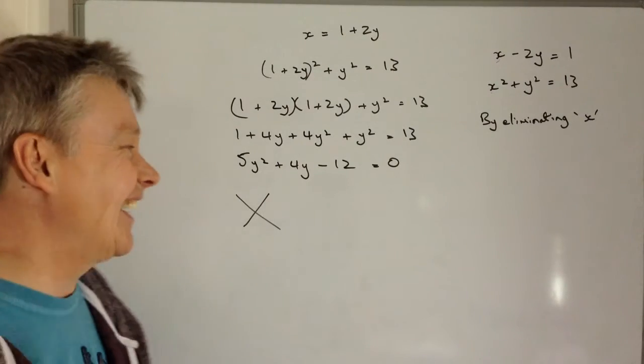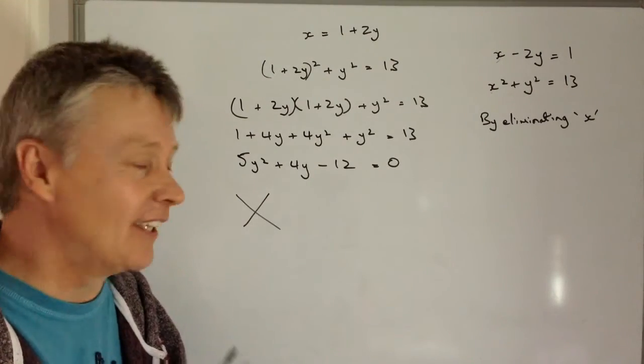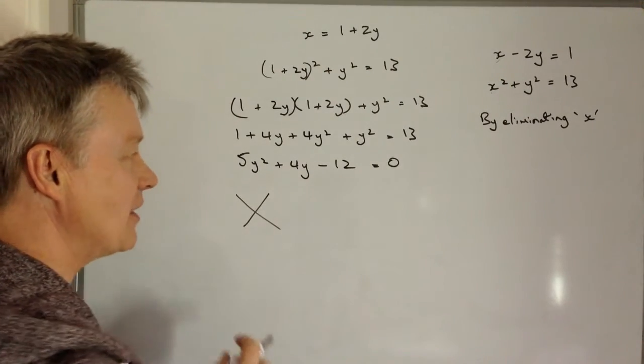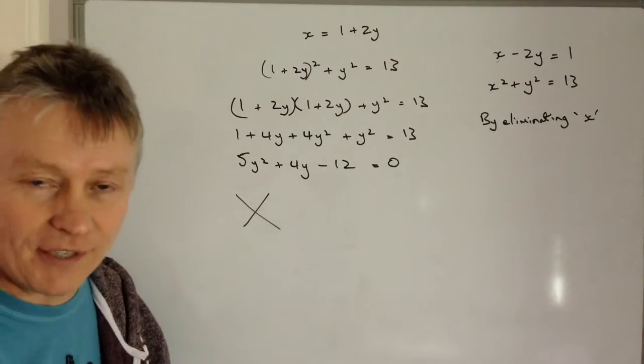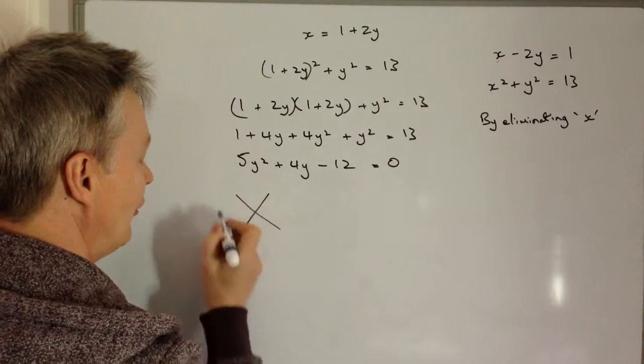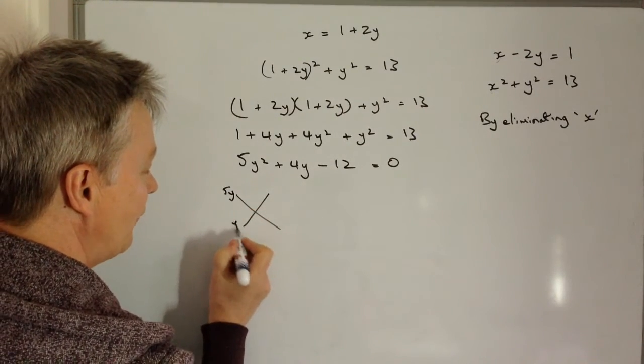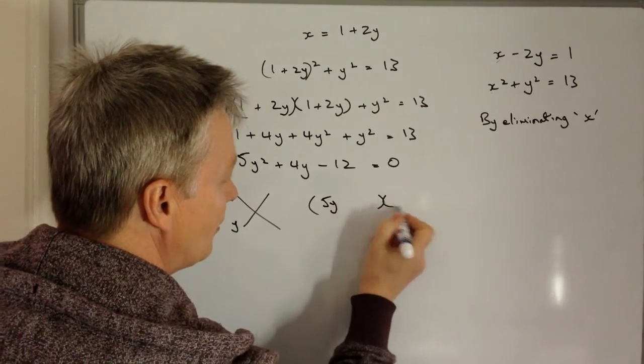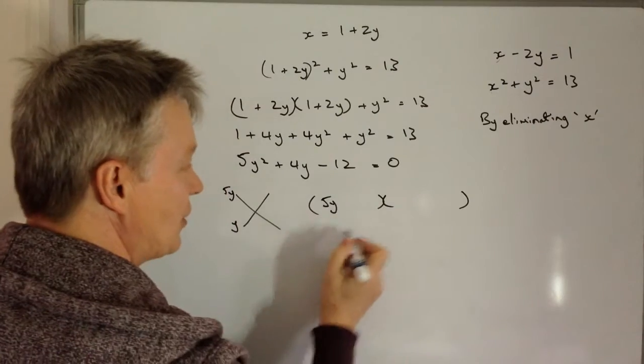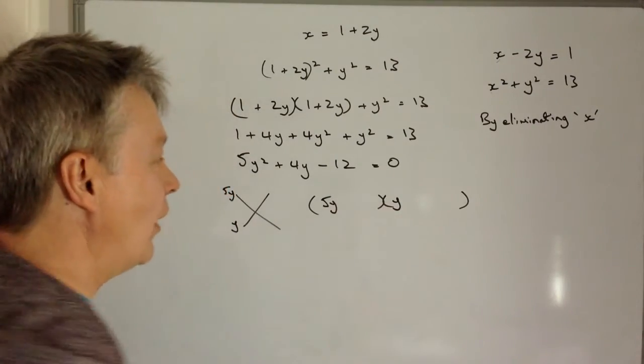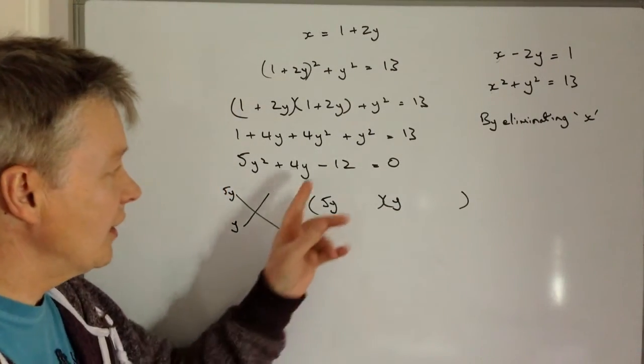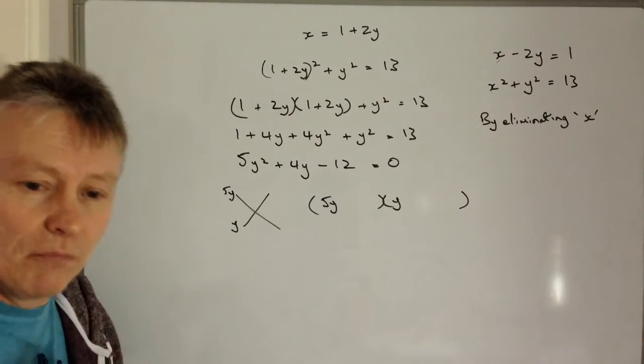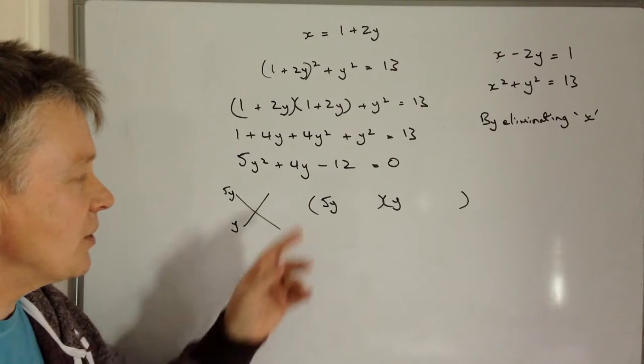That will take you through to the video if you want to have a look at that at the end. But the reason I use cross method is because it gives me a kind of visual representation of the factorization of the two brackets. This is 5Y and Y. So I know that my first term and third term is 5Y and Y. The next thing is I've got this minus 12. Well, there's a couple of things you can do to multiply together to make minus 12, 6 and 2 or 4 and 3.